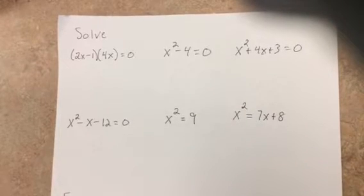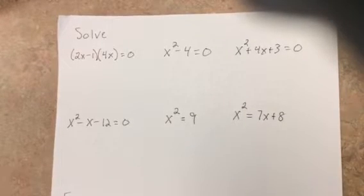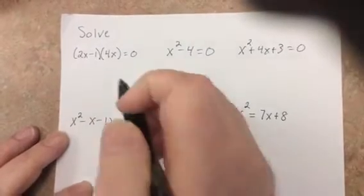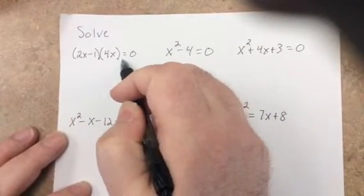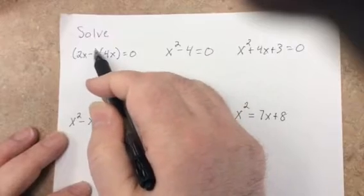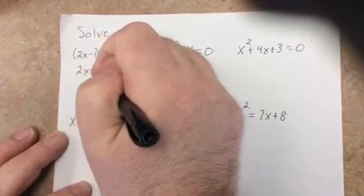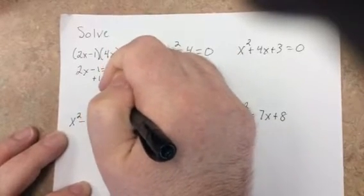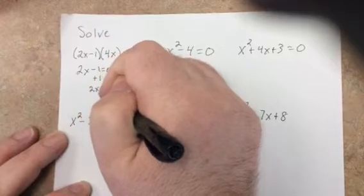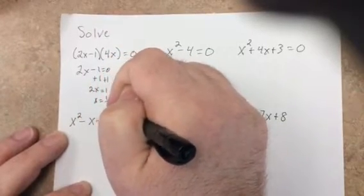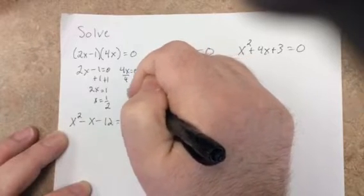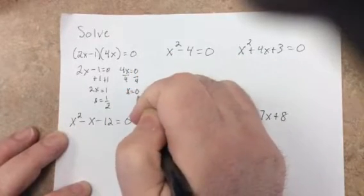Turn it back on when you have these six done and I'll do them then. Freeze it! Okay, whenever you have a product equal to zero, you set each one equal to zero and solve. Here you add one, divide by two. Here you divide by four. So I have two answers: one-half and zero.